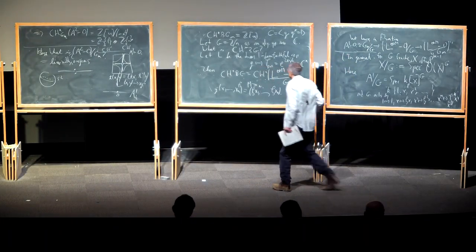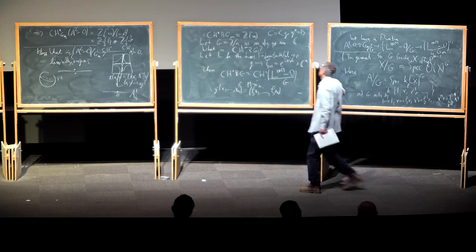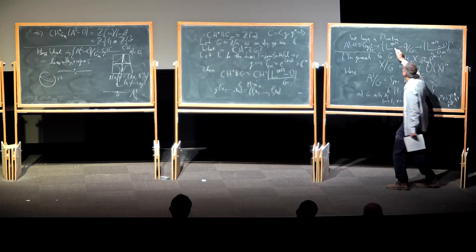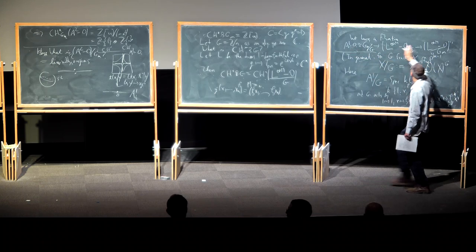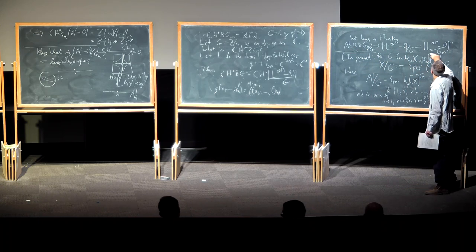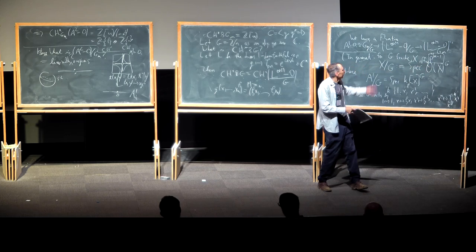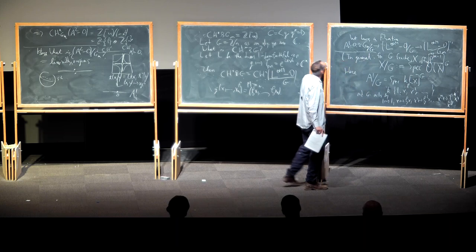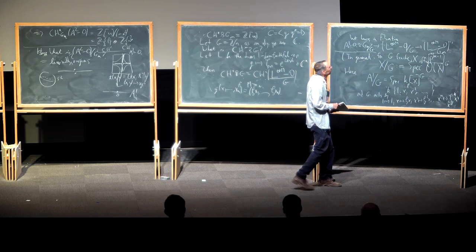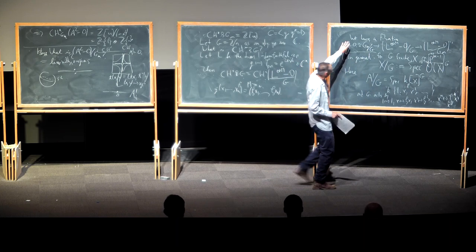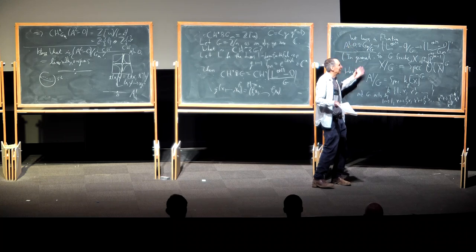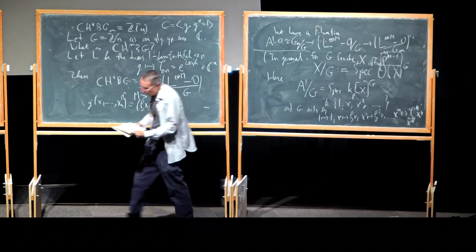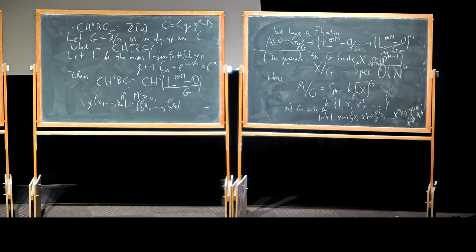So to compute the equivariant Chow ring of the cyclic group — the Chow ring of its classifying space — it just means computing the Chow ring of a certain A¹\{0} bundle over projective space. The only question is: which line bundle is it? After analysis, you realize this line bundle is O(N).